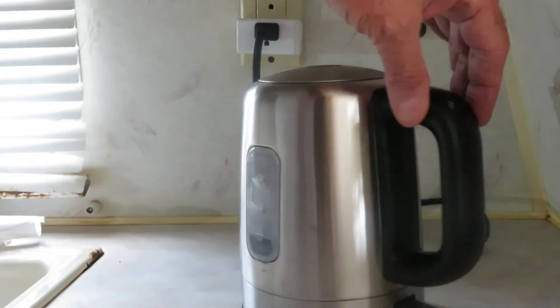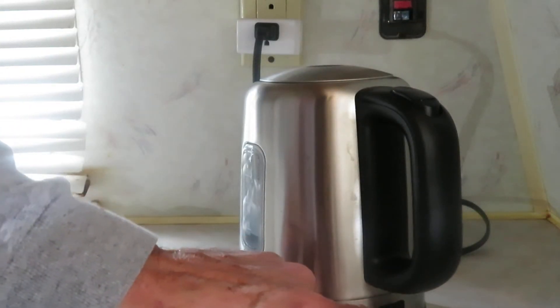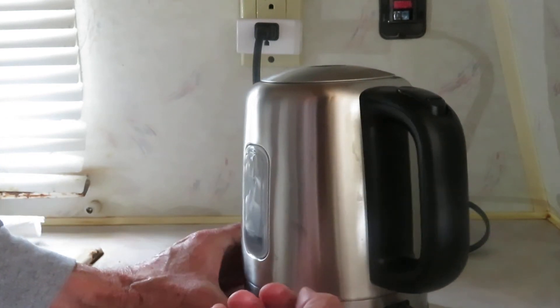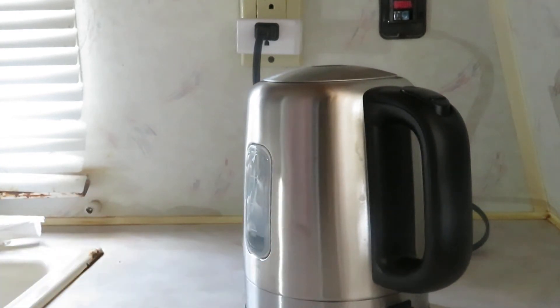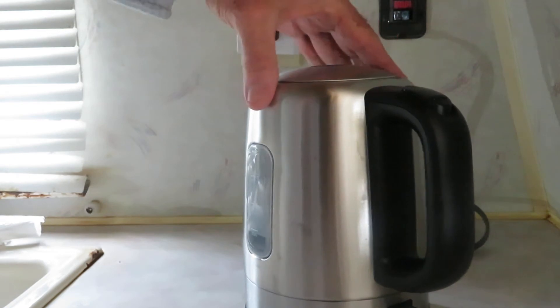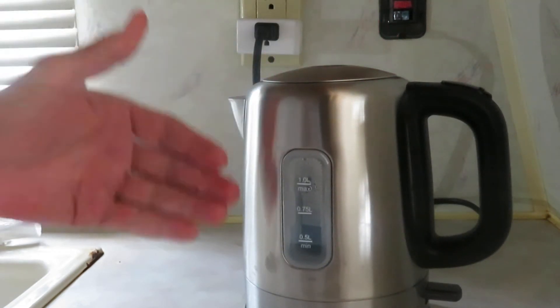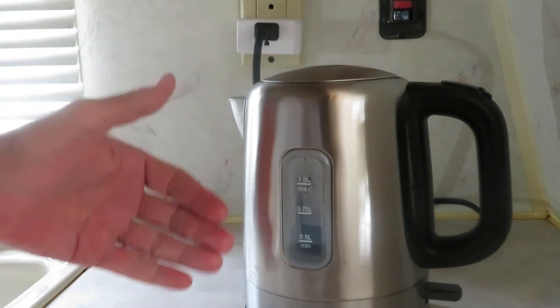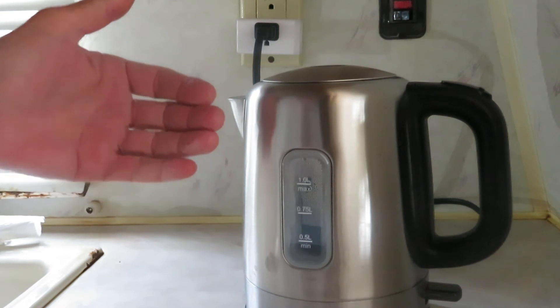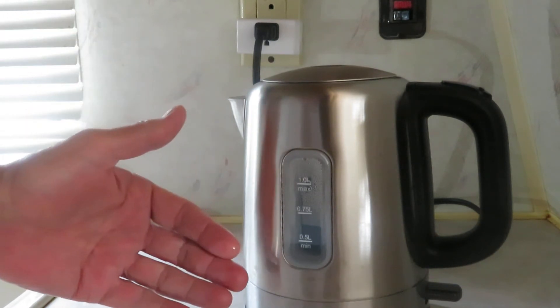It has an on-off switch on the bottom right here that lights up when the power is on. The kettle will automatically shut off when the water comes to a boil, and it has a safety mechanism so if the pot starts to boil dry, it will automatically cut off.